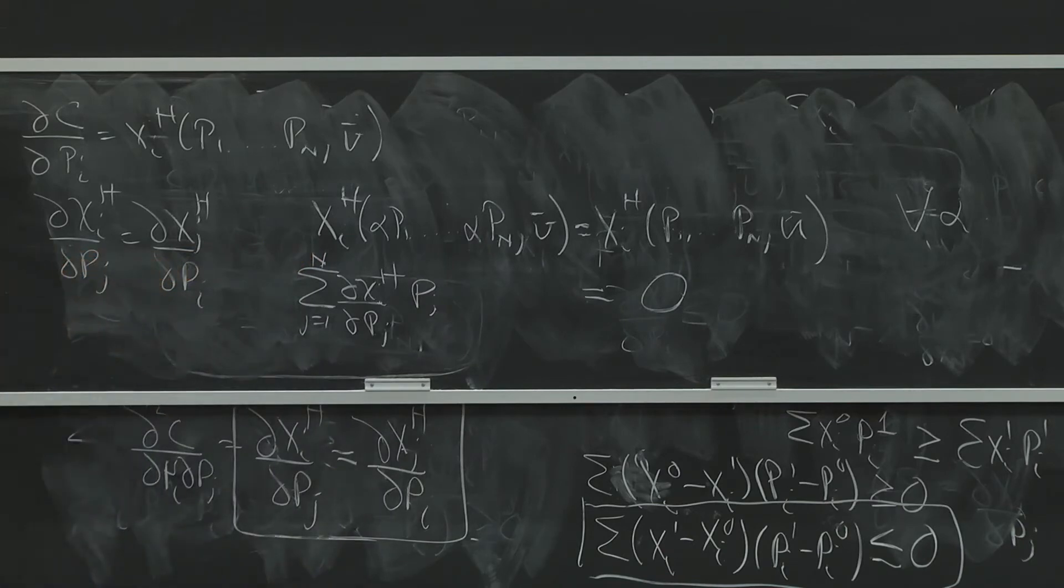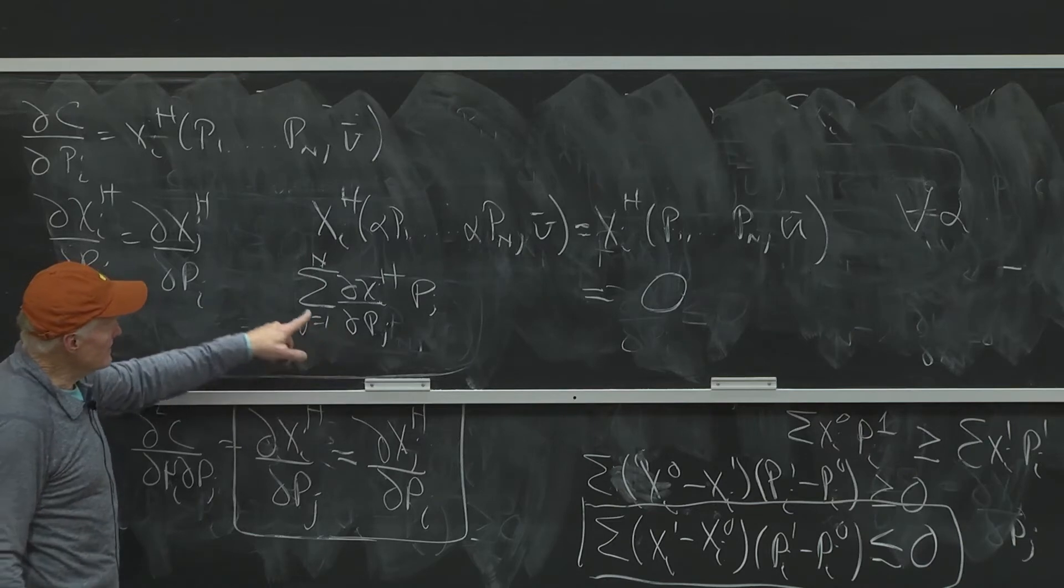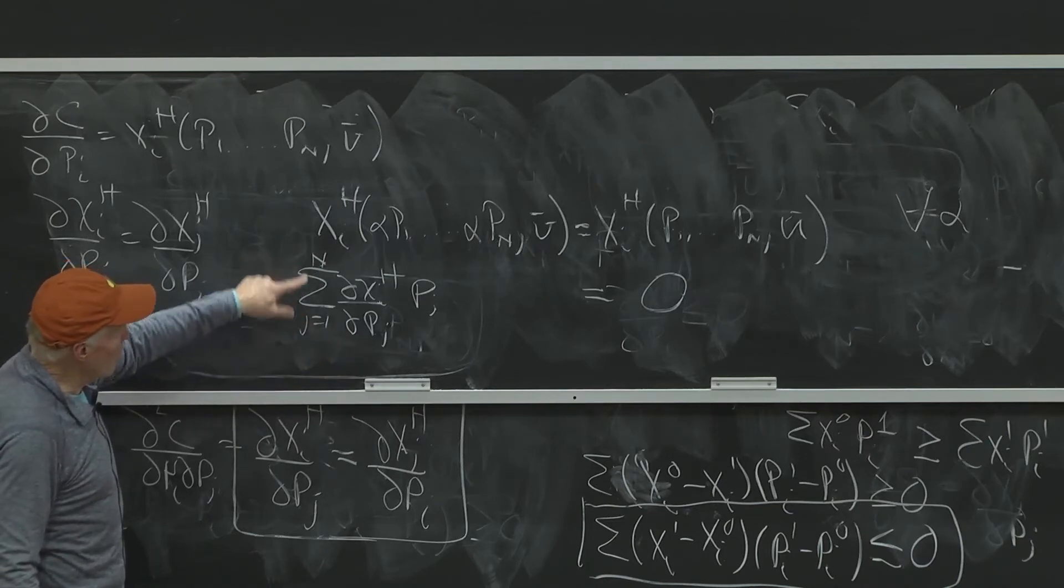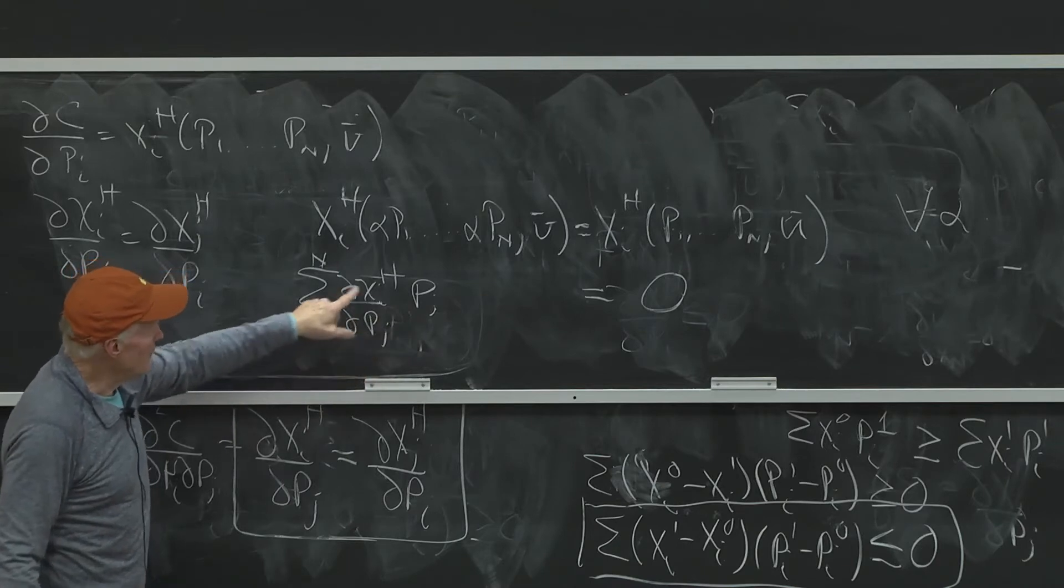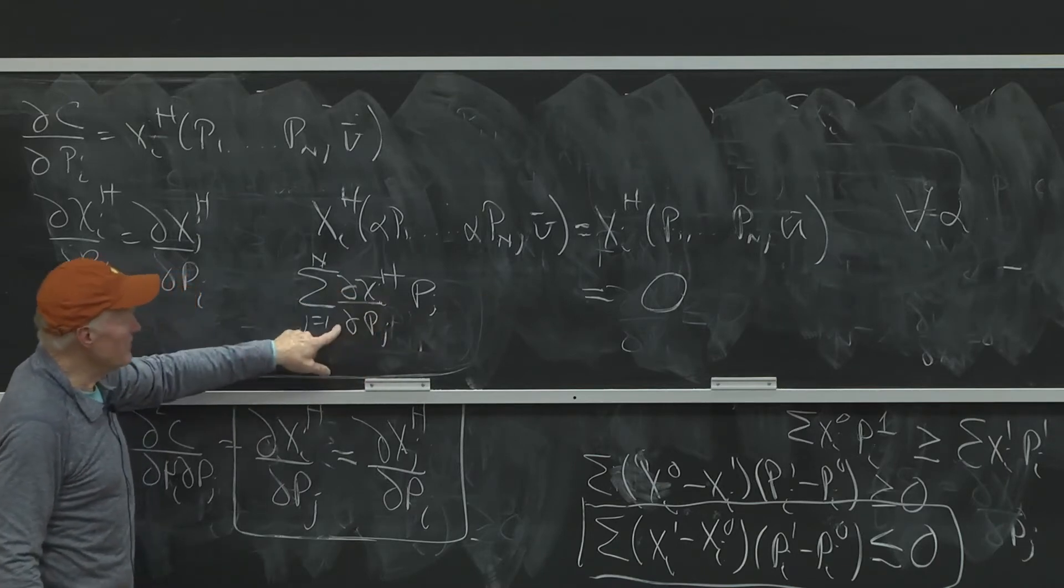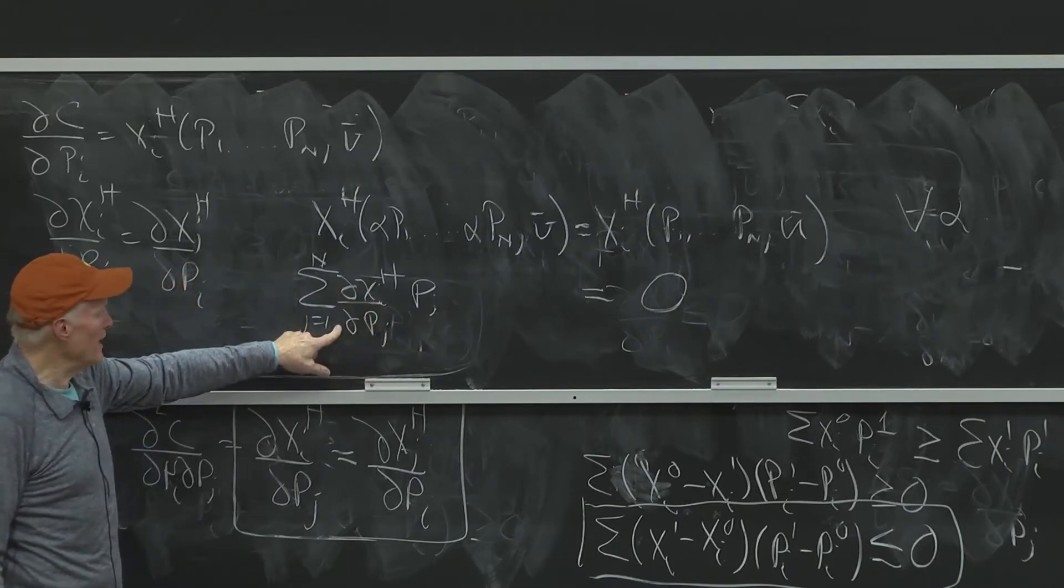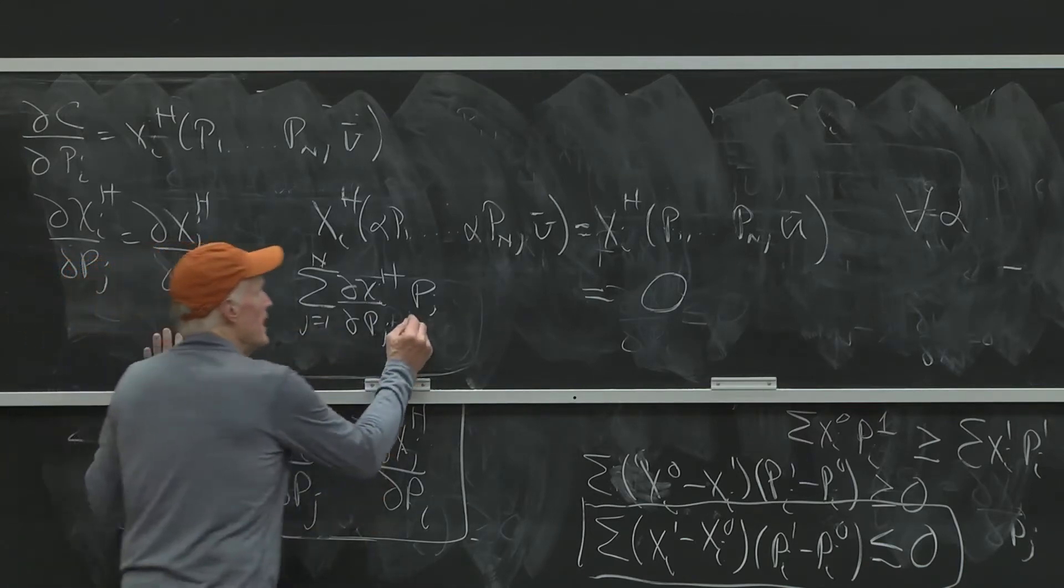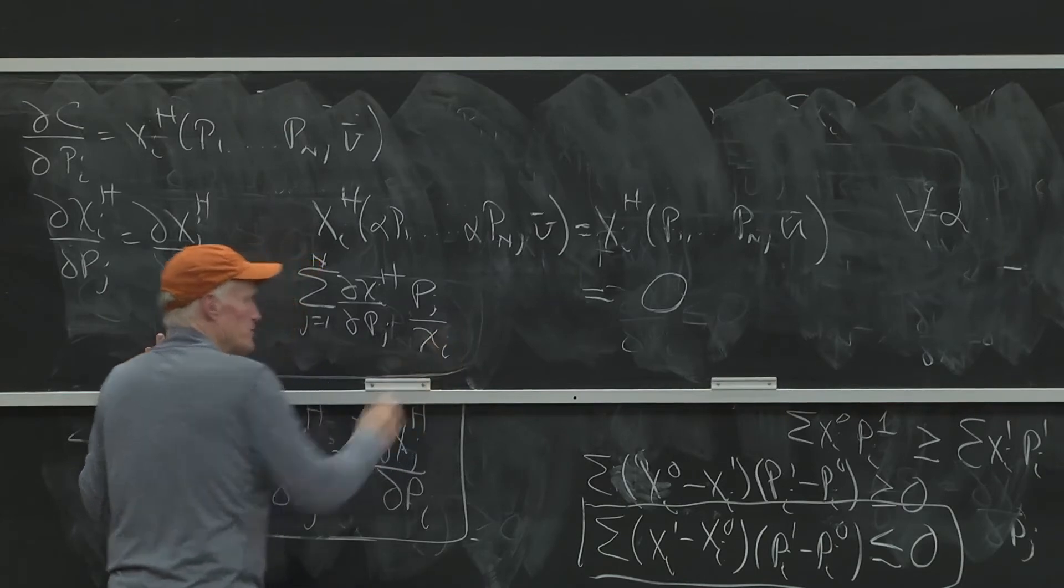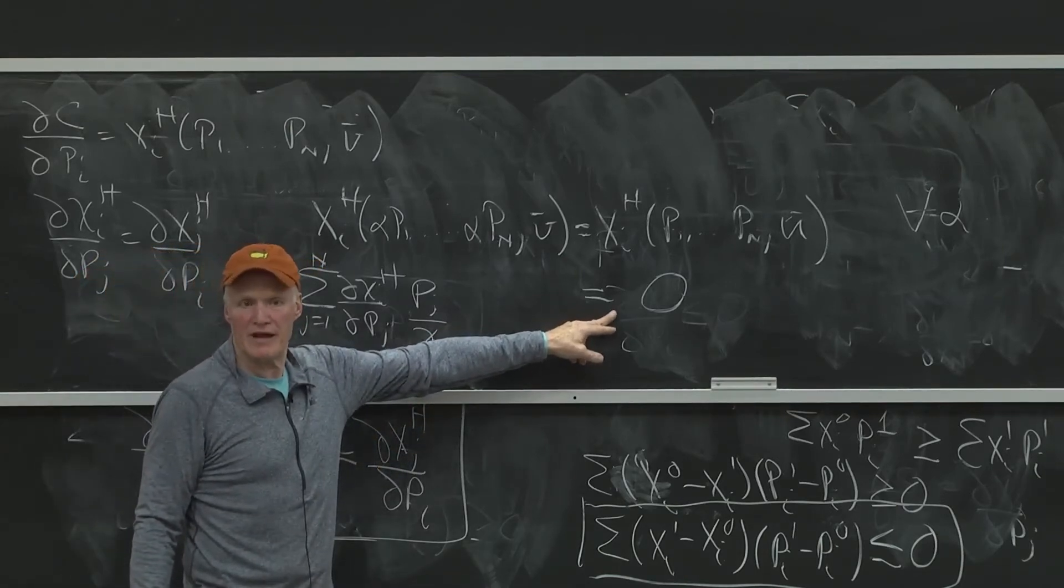It says homogeneity says that if I add up over all the goods weighted by their prices, these price derivatives are equal to zero. Well, let me put that in a different way. Let me divide through by xi.